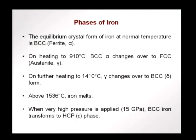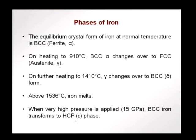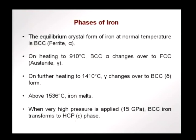Let us look briefly at the phase diagram of iron. At equilibrium at normal temperature, iron exists as a BCC structure — ferrite, the alpha phase. On heating to 910 degrees Celsius, the BCC alpha changes to FCC structure. We get austenite represented by gamma. Further heating to 1410 degrees Celsius, the austenite becomes a BCC delta phase, and above 1536 degrees Celsius, iron melts. At very high pressures, say 15 GPa and above, the BCC iron transforms to a HCP phase represented by epsilon. We are more concerned with what happens between ferrite and austenite in the development of the microstructure.